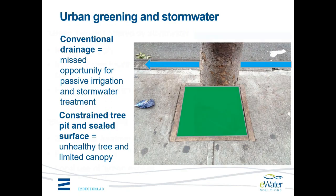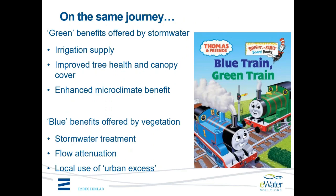We are essentially on the same journey. Stormwater offers a range of potential benefits for green infrastructure. It can provide irrigation, help improve tree health and canopy cover, and we can get better microclimate outcomes if stormwater is going to our trees. On the flip side, vegetation provides benefits for our water system — stormwater treatment through bioretention, rain gardens or tree pits, a certain level of flow attenuation, and locally using urban excess to reduce flow volumes going into our waterways.